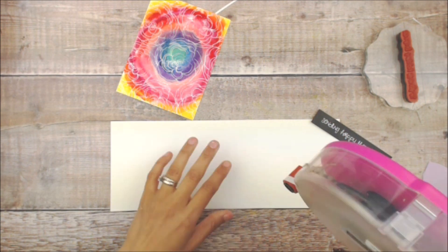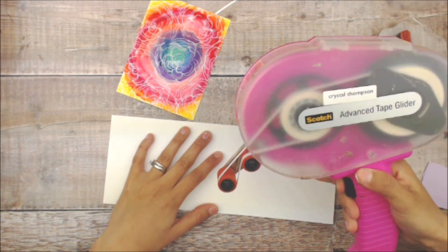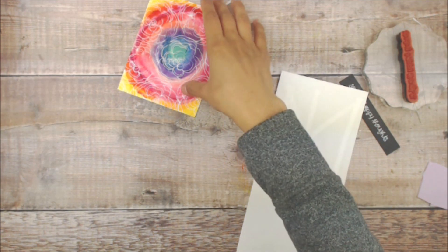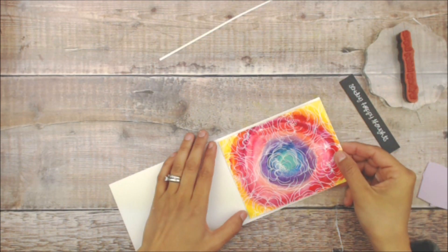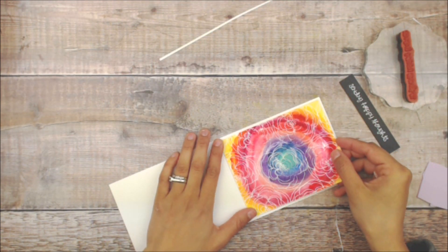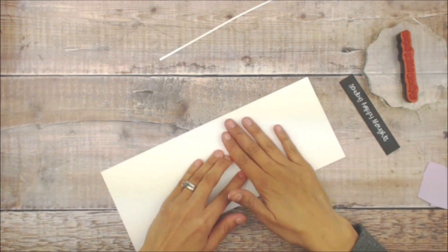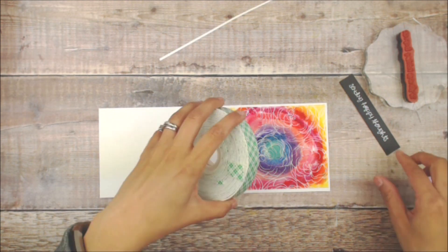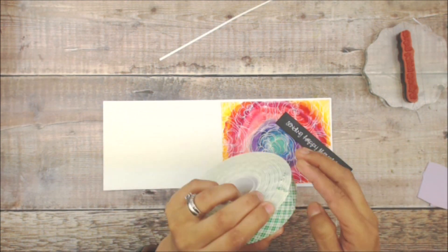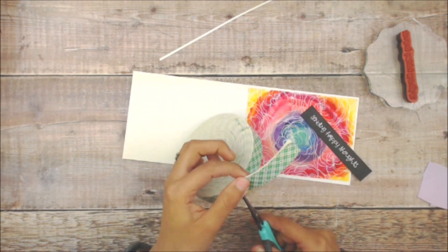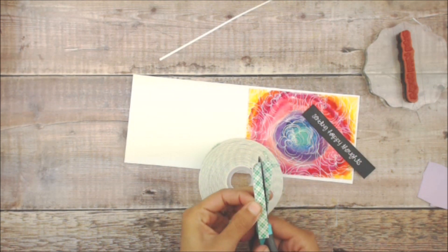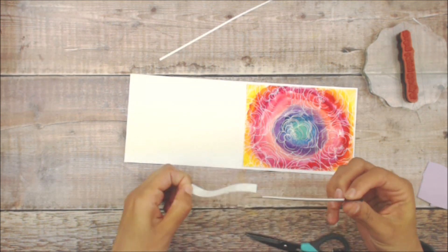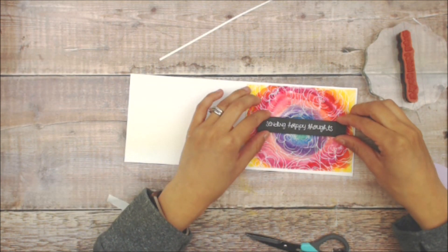Now it's time to put our card together. I have my white card base ready to go, putting adhesive onto it. I'm going to add the back of that black cardstock, and then we're going to place this on the center of our card.